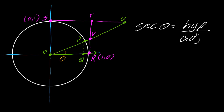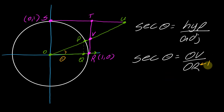What about secant of theta? That's hypotenuse over adjacent side. Using OV as my hypotenuse and OR as my adjacent side: OV over OR. Since OR equals one, OV is just the value of secant theta.